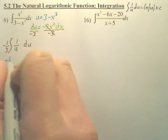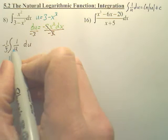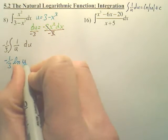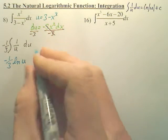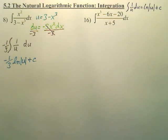We simply have negative one-third. The integral of 1 over u is simply going to be ln u plus c, and u is in absolute value.